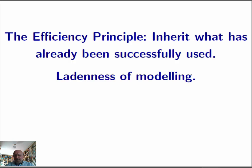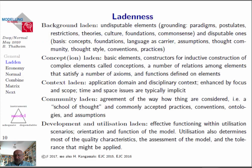We are using something behind that allows us to be better oriented on what we really have to represent. We have an efficiency principle: the efficiency principle states to inherit whatever has already been successfully used. So it leads us directly to laderness of modeling. Modeling laderness is based on at least five different dimensions of laderness. One is background laderness — these are the undisputable elements that typically go to the grounding, like paradigms, postulates, restrictions, theories, culture, foundations, and common sense. Or also the disputable ones that mainly go to the basis: concepts, foundations, languages, assumptions, thought communities, thought styles, conventions, practices, etc.